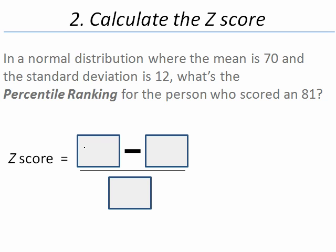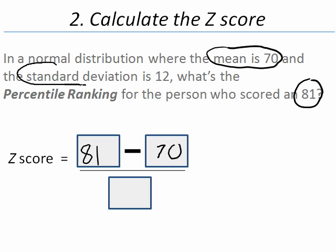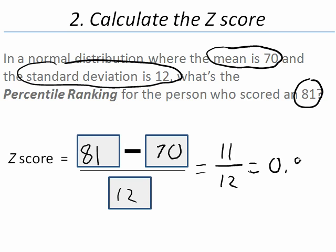So let's fill in these boxes. On the top left box goes the value, 81. On the top right box, the mean, 70. And in the bottom box, the standard deviation, 12. Now we simply solve. 81 minus 70 is 11 divided by 12. That comes out to be 0.92.